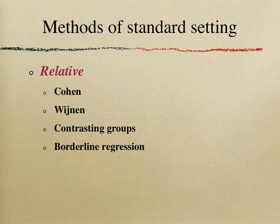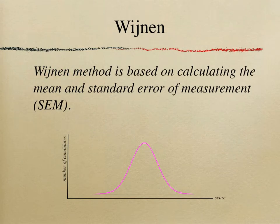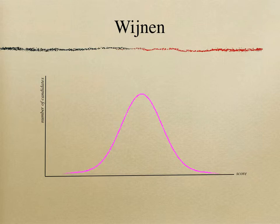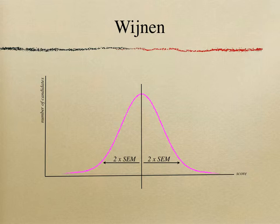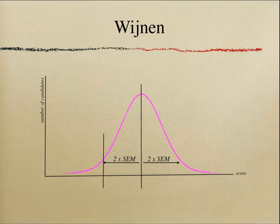The next method in terms of simplicity is the Yname method, which also uses a normalized distribution curve as you can see here. What you have to do is calculate the mean of the curve as well as the standard error of measurement — which is a reflection of the reliability of that particular examination. Two times the standard error of measurement is then used to find where that line sits on the curve. You're interested in the left-hand side of the mean, and wherever that cutoff point is becomes your pass mark.